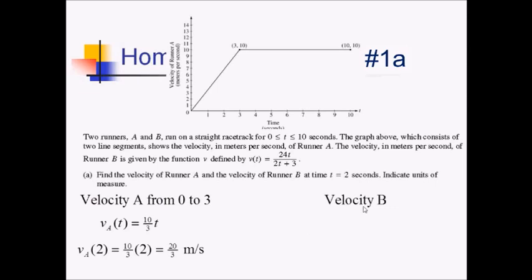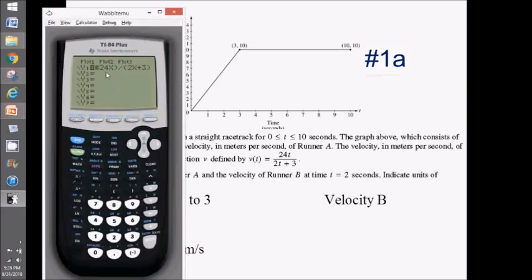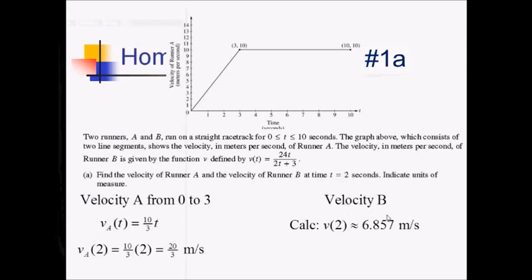For runner B, plug two into the velocity function. I entered 24x over 2x plus 3 into y1 on the calculator, using x instead of t. Using alpha-trace to call up y1 and plugging in two, I get approximately 6.857 meters per second.